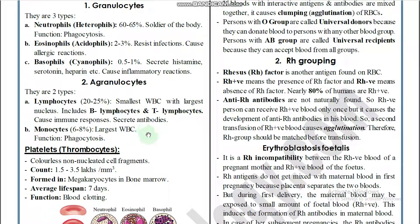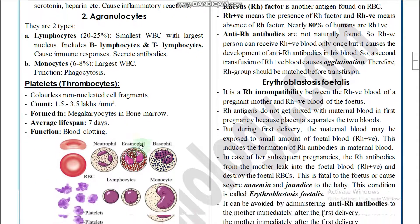Monocytes make up 6 to 8% of WBCs. They are large WBCs and their function is phagocytosis. Both neutrophils and monocytes are involved in phagocytosis.